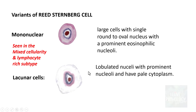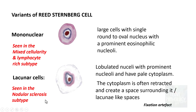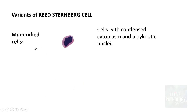The next variant is the lacunar cell, which has a lobated nucleus and prominent nucleoli, similar to the classical and mononuclear variants. The cytoplasm is very delicate and pale, and importantly, it is often retracted — creating a space surrounding the cell, making it look as if the cell is in a lacuna. This is essentially a fixation artifact, and this lacunar variant of the RS cell is commonly seen in the nodular sclerosis subtype.